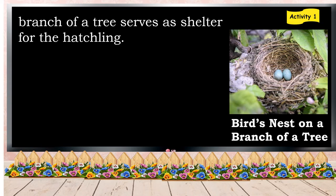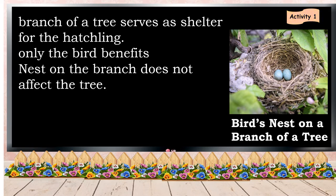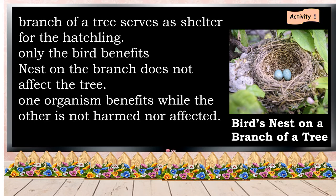In the picture, there is a bird's nest on a branch of a tree. The branch of a tree serves as a shelter for the hatchling. Only the bird benefits. The nest on the branch does not affect the tree. Only one organism benefits while the other one, which is the tree, is not harmed nor affected. And this relationship is called commensalism.